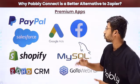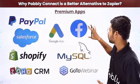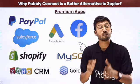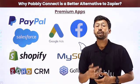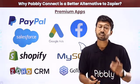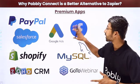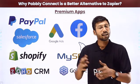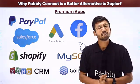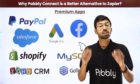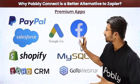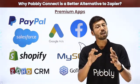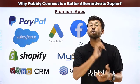Regarding premium apps: applications like PayPal, Salesforce, Shopify, Zoho CRM, Google Ads, Facebook Lead Ads, MySQL, and GoToWebinar are categorized as premium apps in Zapier, requiring higher-tier plans for full access. In Pabbly Connect, there is no such premium apps category — every application is accessible in any plan.